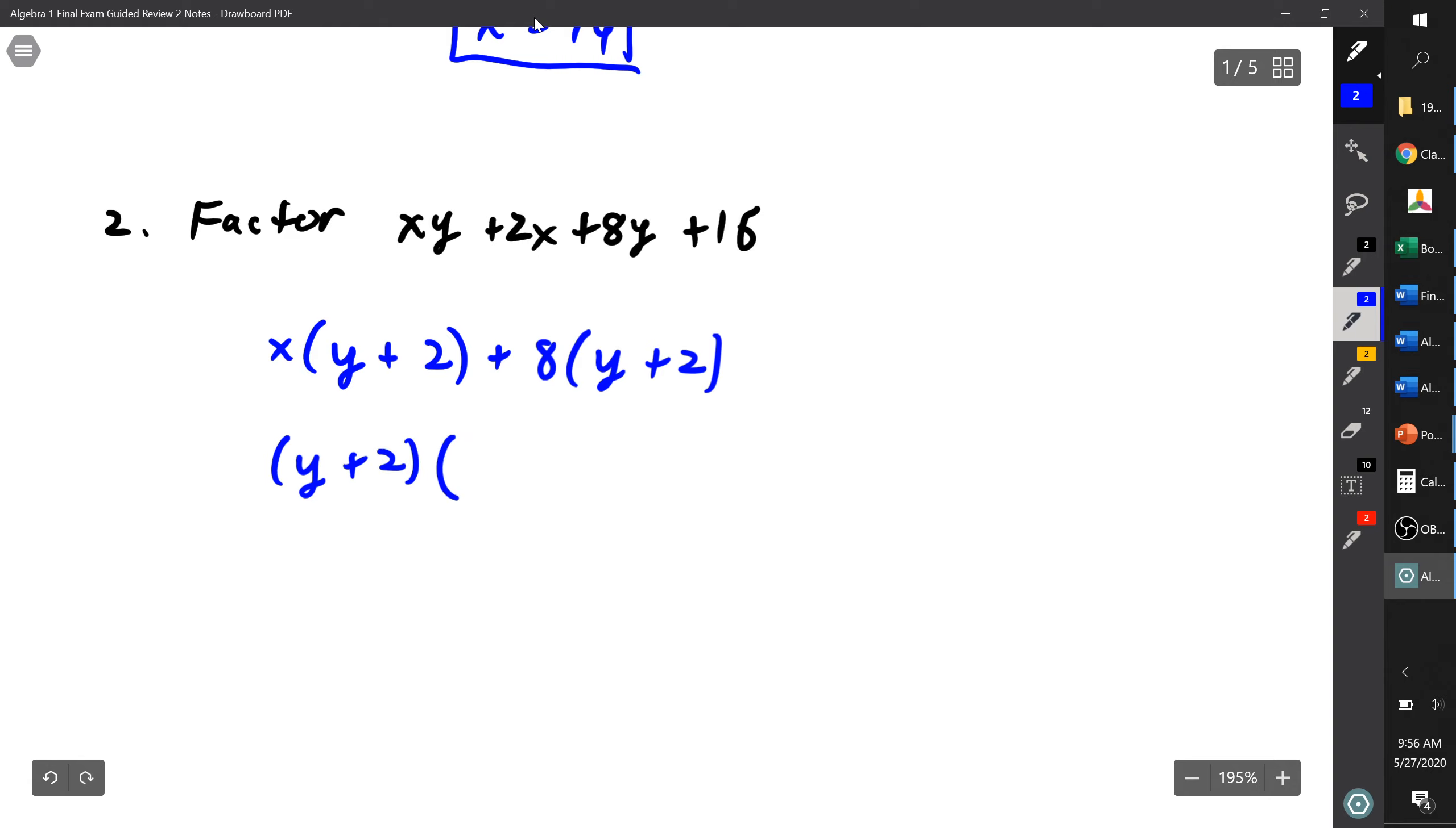So I get a y plus 2 times—the whole big first term now, when I factor out y plus 2, I'm just left with the x—and the whole second big term now, when I factor out the y plus 2, I'm left with an 8. And that is my answer. You can always check your answer by multiplying it out and seeing if it takes you back to what you started with. y times x is xy, y times 8 is 8y, there's that there, 2 times x is 2x, and then 2 times 8 is 16.